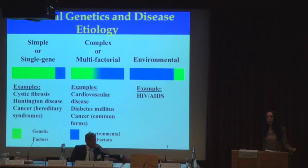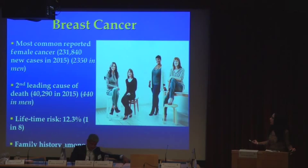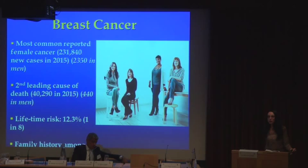First, some statistics. Breast cancer is the most common reported female cancer worldwide. In the United States, there will be an estimated 231,000 new cases of female breast cancer in 2015. It is the second leading cause of cancer death, with an estimated 40,000 deaths among women and 440 among men in the U.S. in 2015. The lifetime risk of breast cancer is 12 percent — that is, one in eight women in the U.S. will develop breast cancer by age 70.